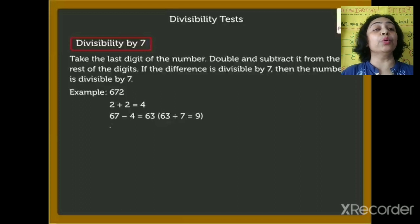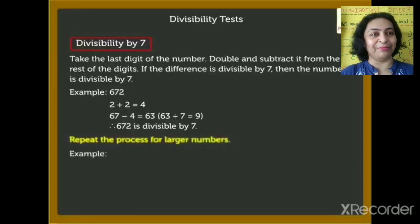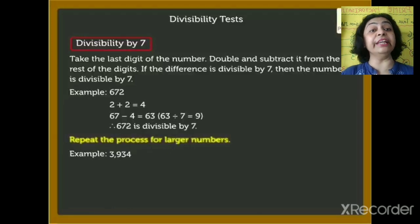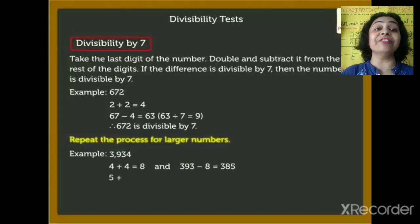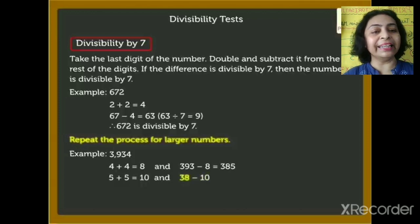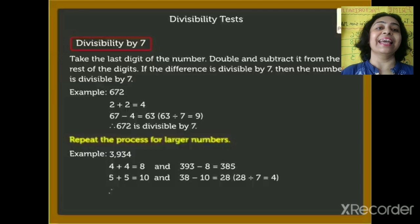For larger numbers, repeat the process. Example: 3934. Last digit is 4. Double it: 4 plus 4 is 8. Rest of the number is 393. Subtract: 393 minus 8 is 385. Now repeat: last digit of 385 is 5. Double it: 5 plus 5 is 10. Rest is 38. Subtract: 38 minus 10 is 28. Is 28 divisible by 7? Yes, so we can say 3934 is divisible by 7.